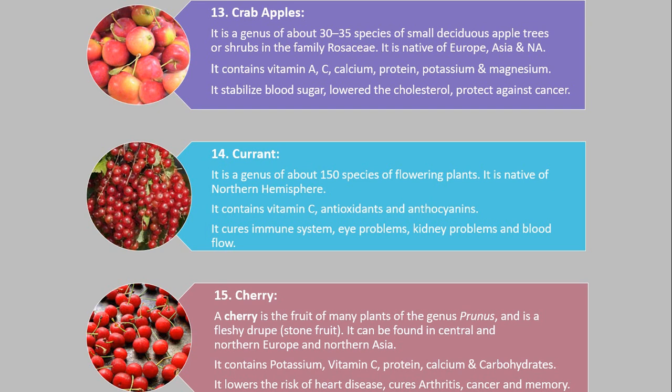Number 15. Cherry. A cherry is the fruit of many plants of the genus Prunus and is a fleshy drupe, stone fruit. It can be found in Central and Northern Europe and Northern Asia. It contains potassium, vitamin C, protein, calcium and carbohydrates. It lowers the risk of heart disease, cures arthritis, cancer and improves memory.